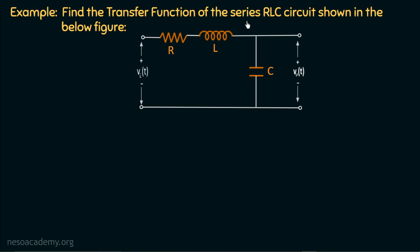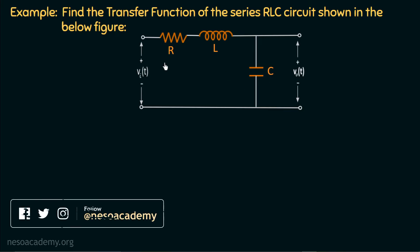Find the transfer function of the series RLC circuit shown in the below figure. A series RLC circuit is given to us in which we have a resistance R, an inductor with inductance L, and a capacitor with capacitance C. The input voltage is Vi and the output voltage, which is measured across the capacitor, is Vout. These three elements are connected in series, so the current across all three elements will be the same. In this example, we need to find out the overall transfer function of this series RLC circuit.